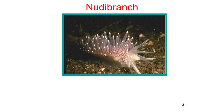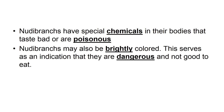Here we have the nudibranch — an interesting-looking creature. They do not have a shell, and they have dorsal projections that they can use as gills. They do have nematocysts, where they can discharge toxins into their prey. Nudibranchs have special chemicals in their body that leave a bad taste in a predator's mouth, or they're poisonous, and they can also be brightly colored as an indicator that they're dangerous and not good to eat.